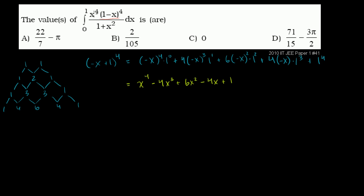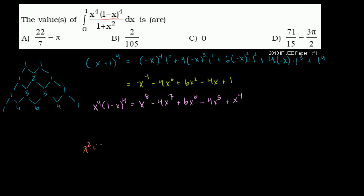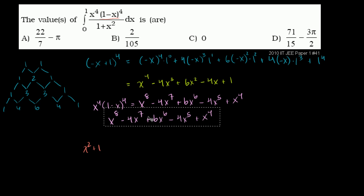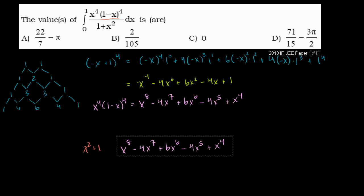Now multiply the whole expanded expression by x to the fourth. So x⁴ times (1 minus x)⁴ equals x⁸ minus 4x⁷ plus 6x⁶ minus 4x⁵ plus x⁴. Now we want to divide this by (x² + 1), so we'll use algebraic long division, dividing x² + 1 into that expression.